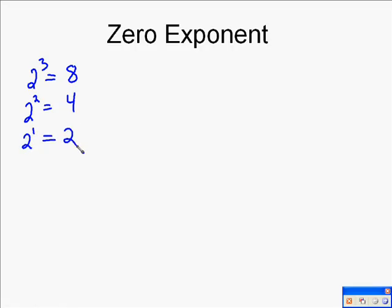And so you have this pattern that's developed. As we go down in 1 in each exponent, 2 to the 3rd, 2 to the 2nd, 2 to the 1st, we're actually dividing by 2 each time. And so to explore this, it only makes sense if we divide the next one by 2, we get to the 1. So 2 to the 0, drop your exponent by 1, would equal 1.